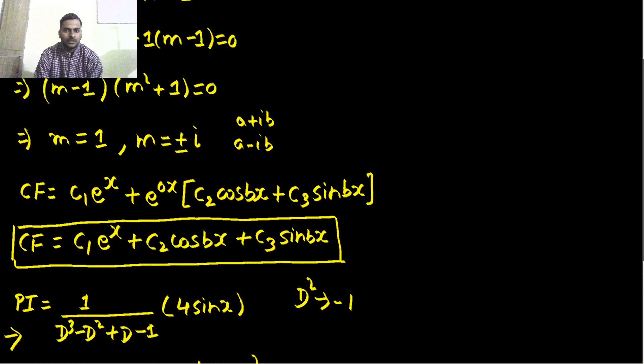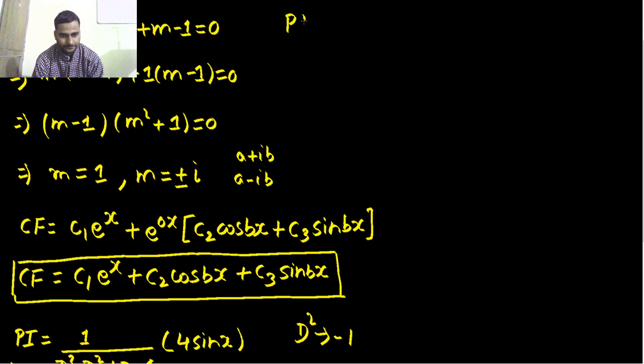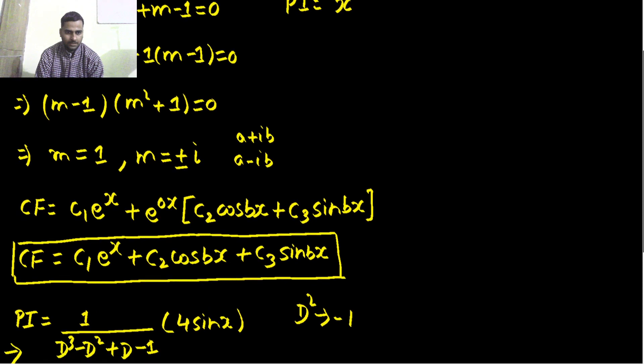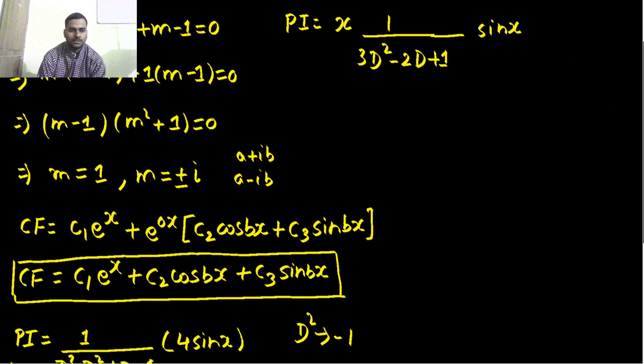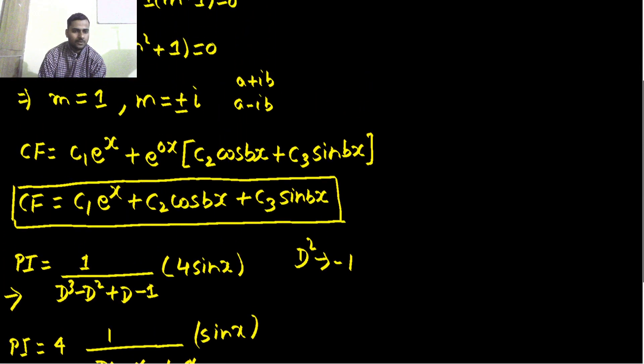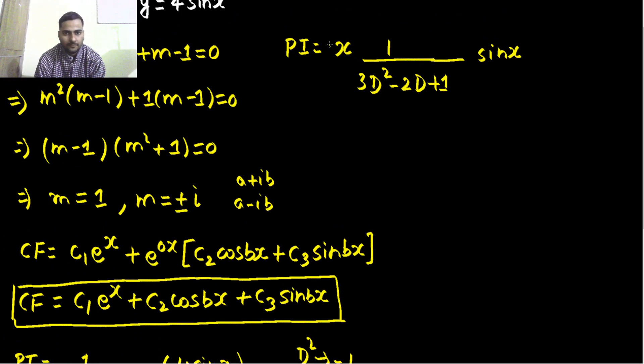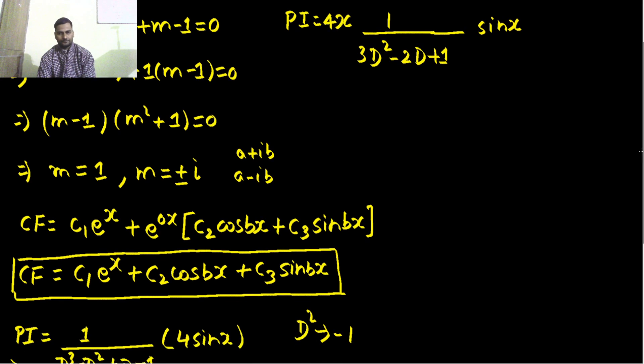Okay so your particular integral will be x being multiplied and if you differentiate D³ you get 3D², if you differentiate D² you get 2D, if you differentiate D you get 1 and if you differentiate -1 you are getting 0. This sin x remains as it is and 4 was also there so that should be 4x.